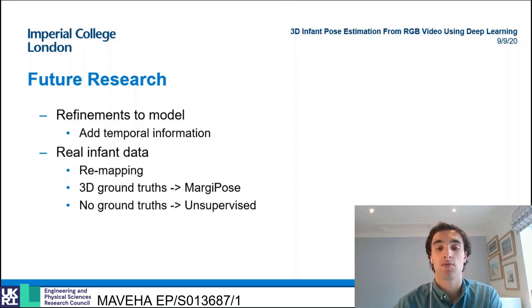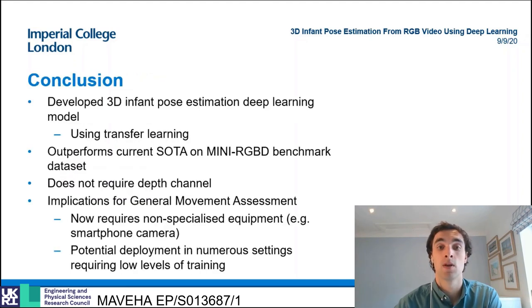Therefore, depending on the future availability of 3D ground truths, either of these models can be adapted to the infant domain to increase performance on the real dataset. To conclude, I've presented the first deep learning model to be developed for 3D infant pose estimation. This has been achieved by using transfer learning to adapt baseline models proposed in the adult domain.